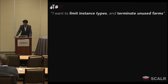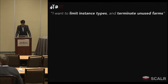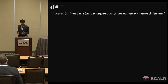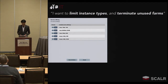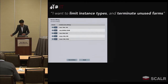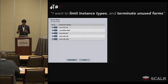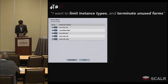What else does IT want to do? They want to limit instance types and terminate unused farms — this is less about understanding costs and more about hard forms of cost control. Limiting instance types reduces the usage of high-priced instances. For example, for a QA testing environment or a small project that developers are working on as an experiment, it may make sense to just turn off large instance types so they don't start racking up costs.